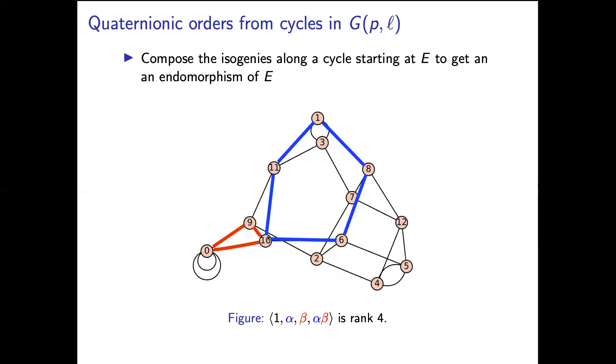And if we get two cycles which don't overlap except at their base point then they're going to generate a suborder of the full endomorphism ring. So if α comes from the blue cycle and β comes from the red cycle then ⟨1, α, β, αβ⟩ is rank 4.